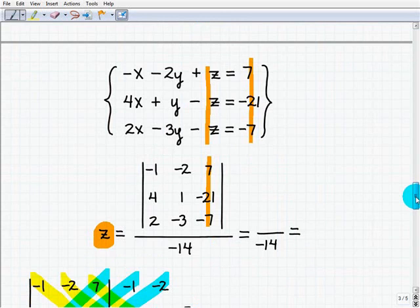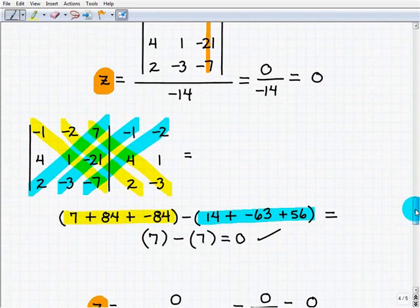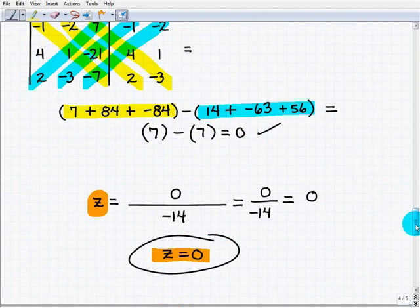So once again, the diagonal method, everything said and done, you get a 0. So it's going to be 0 divided by negative 14, which, of course, is going to be 0. It's really easy. So z is equal to 0.